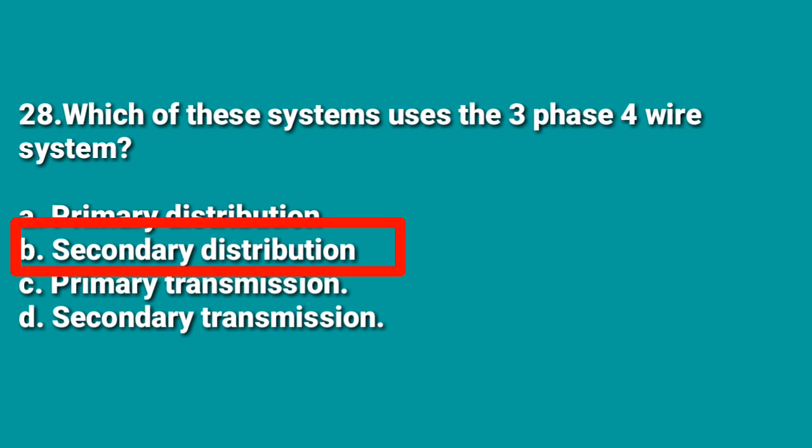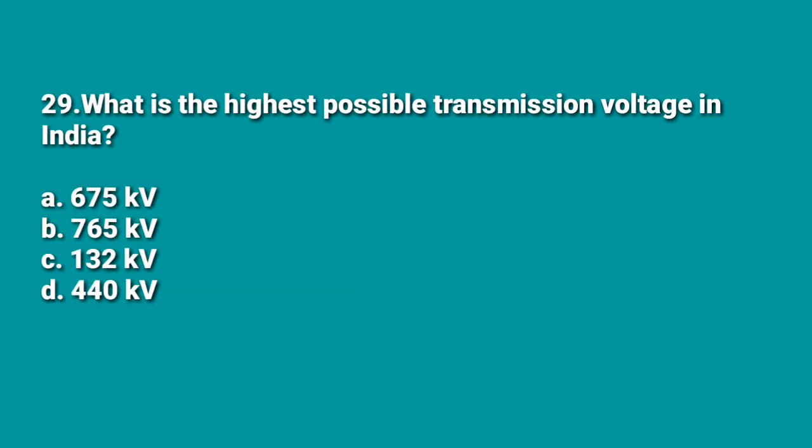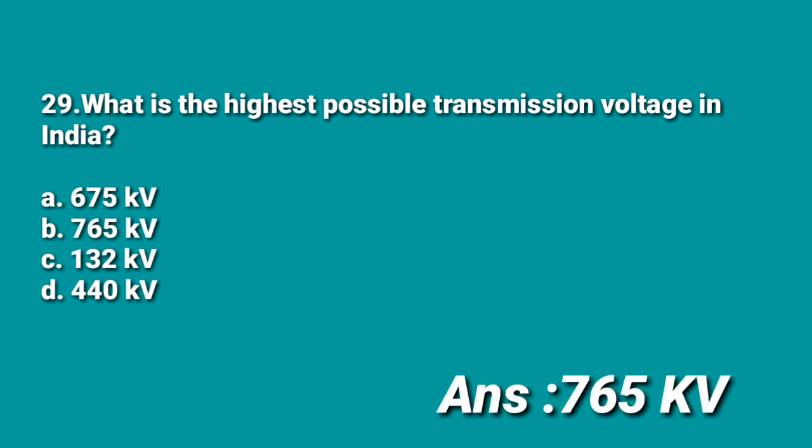The next question: what is the highest possible transmission voltage in India — 675 kV, 765 kV, 132 kV, or 440 kV? The highest possible transmission voltage in India is 765 kV, which is the maximum transmission voltage in India.